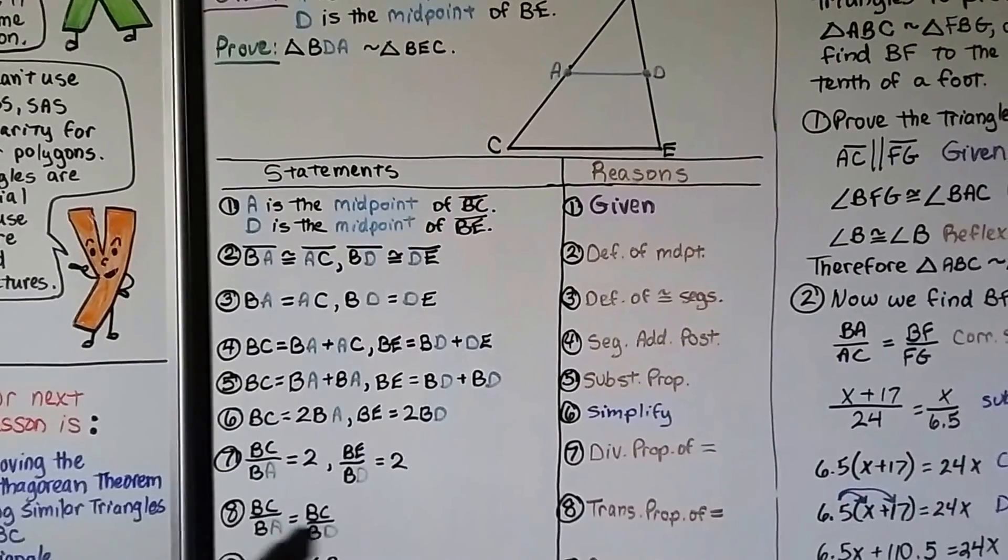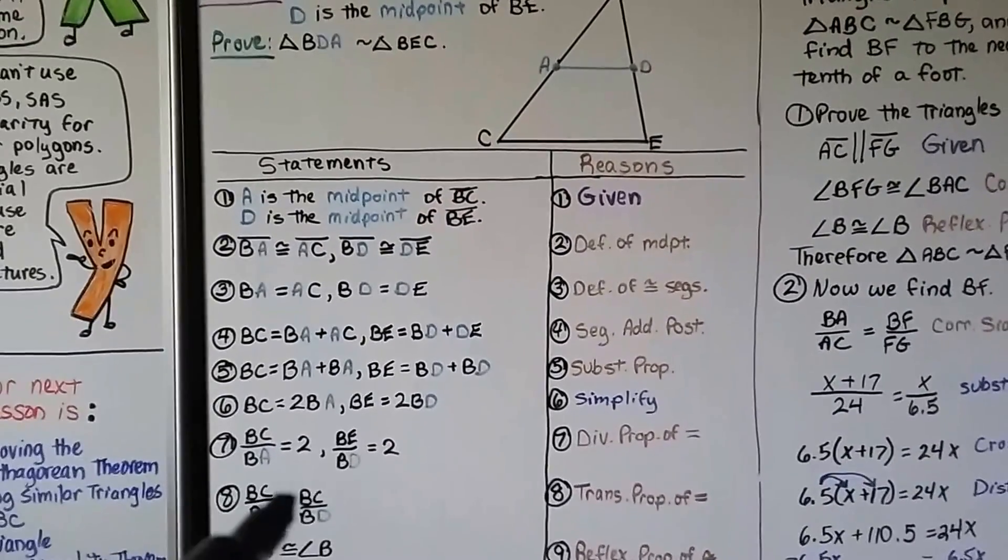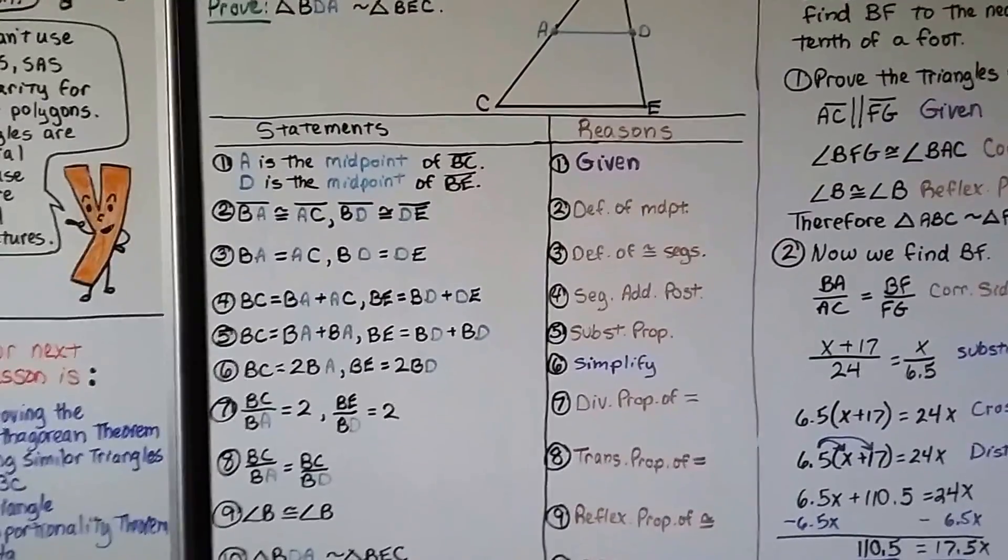Well, they're both equal to 2, so we can say they're both equal to each other. BC over BA is equal to BE over BD. That's the transitive property of equality.